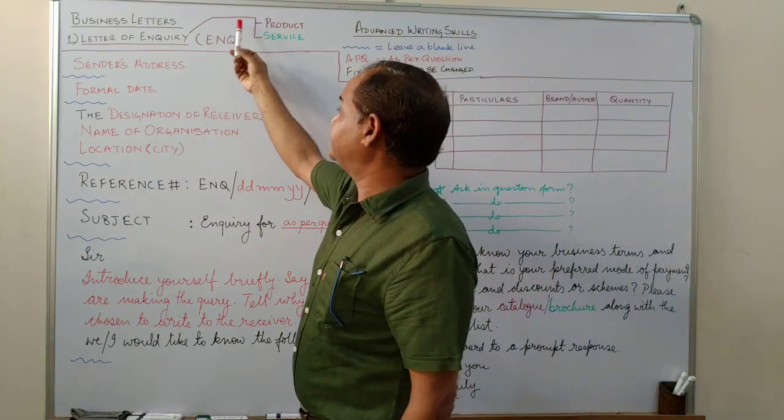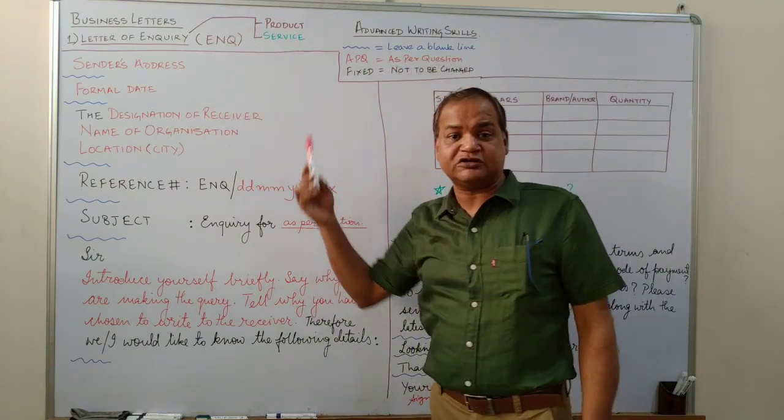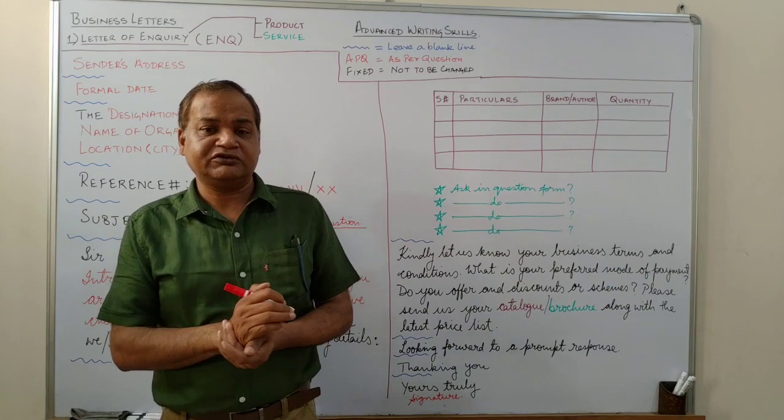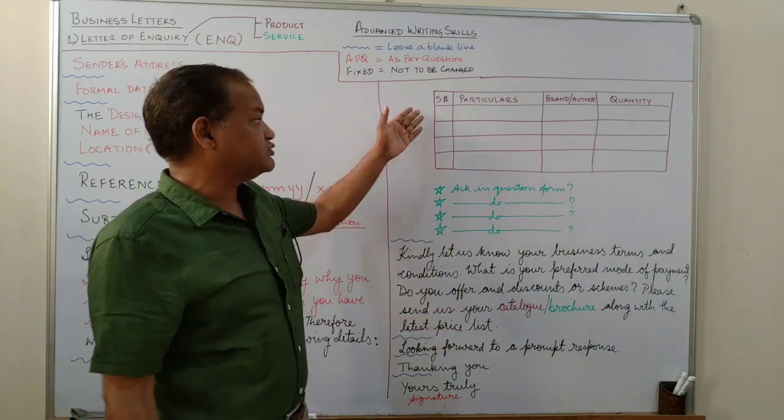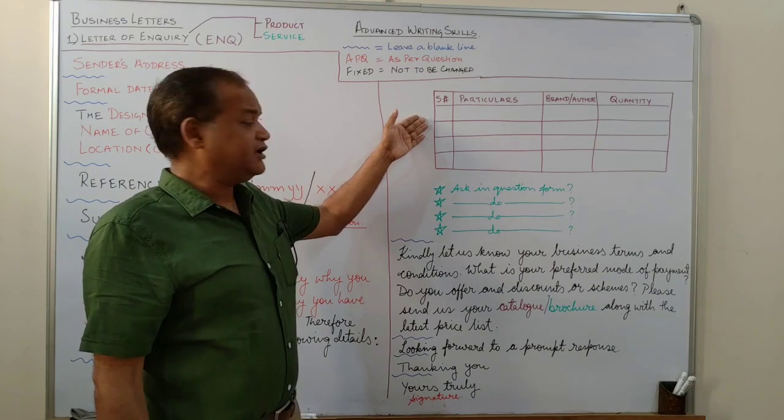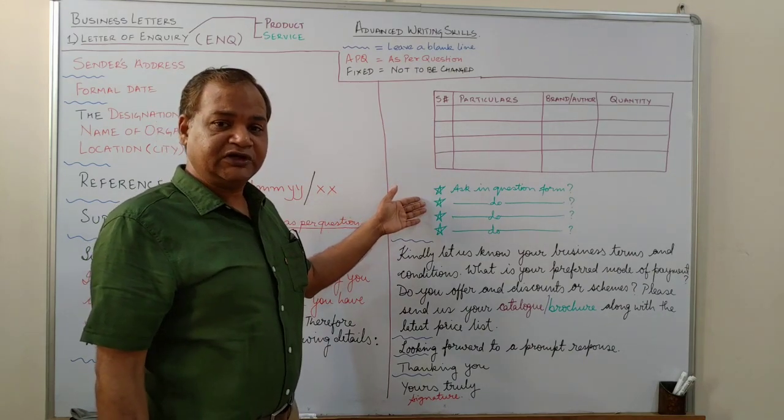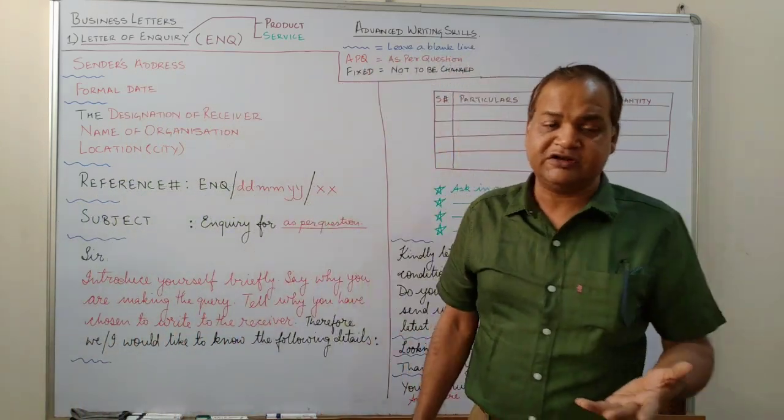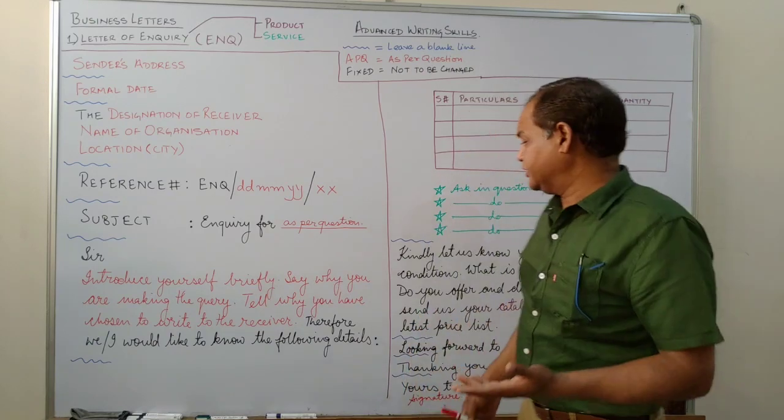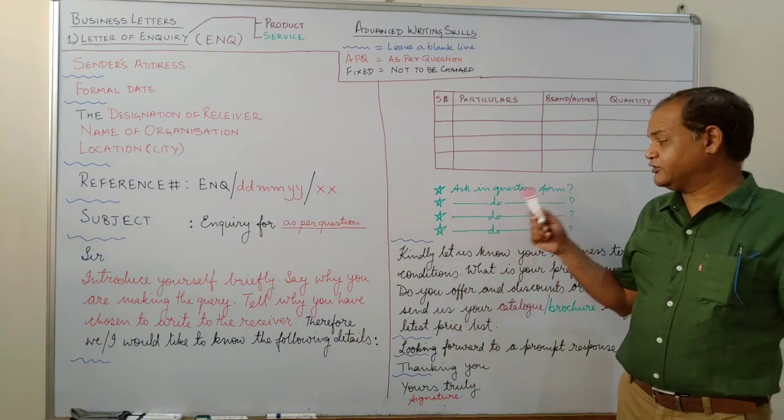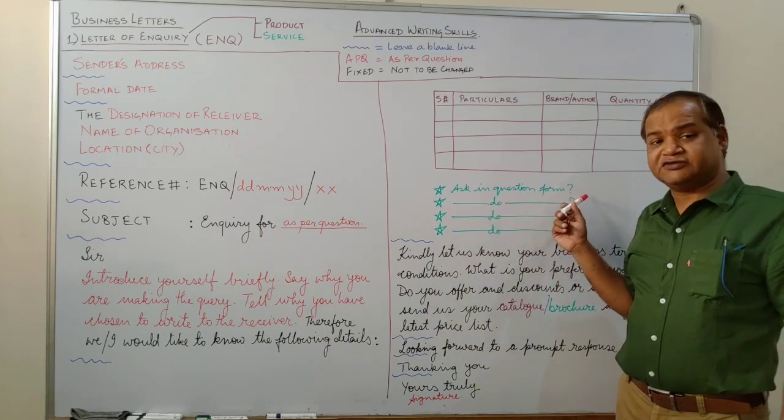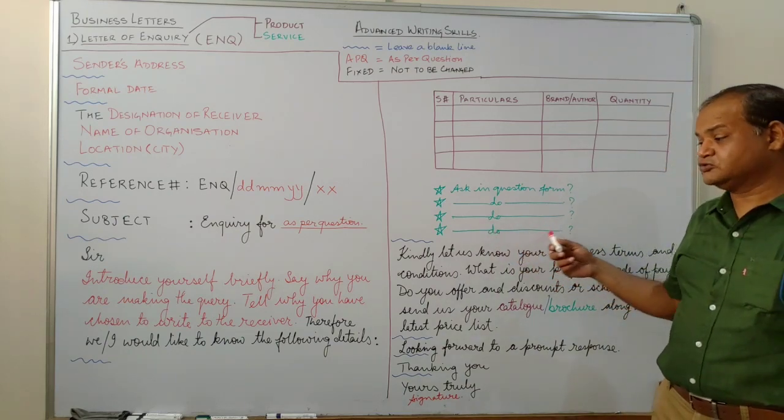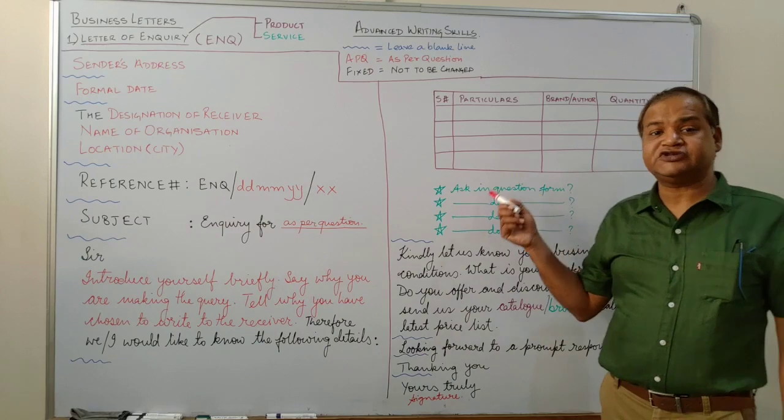So a letter of enquiry can be for two types of enquiries. It could be either for a product or for a service. Now for a service, service is an intangible thing. So you are not talking in physical quantities. Therefore, we cannot use this particular format for asking the query. So we have to ask it in a question form written in four different, four or five different questions. Say for example, if you are enquiring about hotel room availability enquiry, then what types of rooms are available? Are the rooms available between the dates we require? What other facilities do you offer? Do you offer pick and drop services? Do you organise tours and local sightseeing? So those are the kind of questions you will ask here.